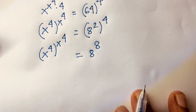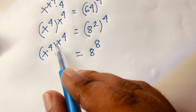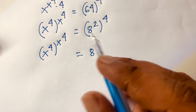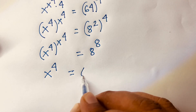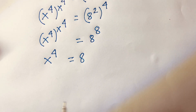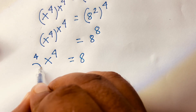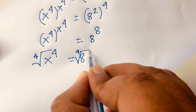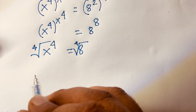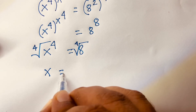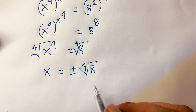Now the base and exponent on both sides match — so we can say x to the power 4 is equal to 8. To find x, I apply the 4th root to both sides. The 4th root cancels the power of 4, giving us x is equal to plus or minus the 4th root of 8. This is our final answer.